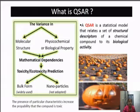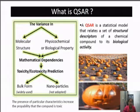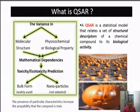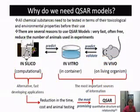The variants in QSAR involve molecular structure and physiochemical or biological property. We determine the mathematical dependency between the molecular structure and physiochemical or biological property, and then predict the toxicity or ecotoxicity — either in bulk form, which is widely used, or nanoparticle form, which is not yet widely adopted. The presence of particular characteristics increases the probability that a compound is toxic.